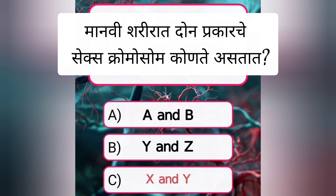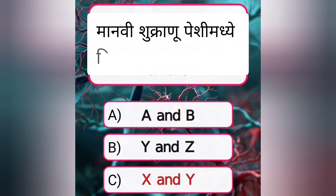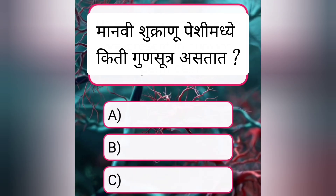What are the two types of sex chromosomes in humans? Answer C. X and Y.